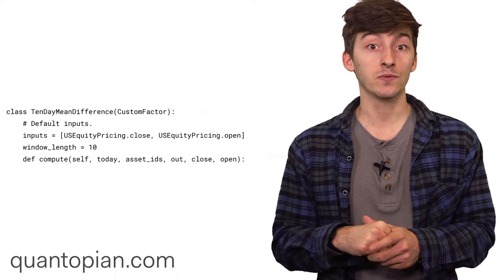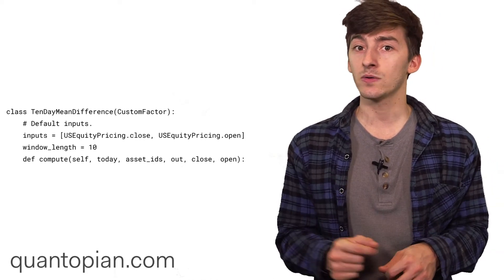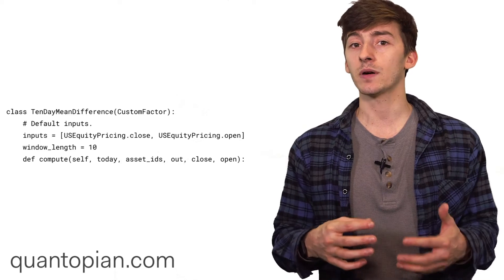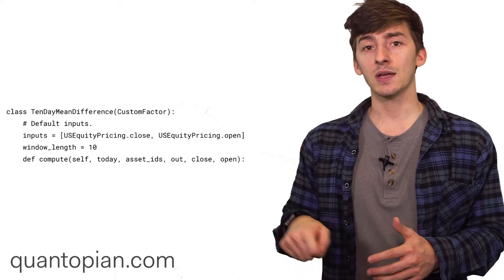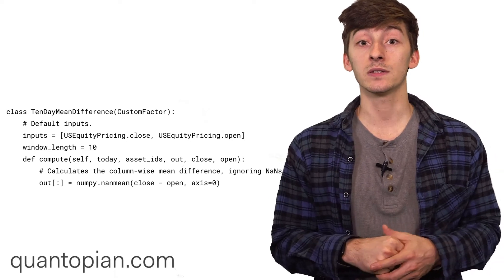Finally, you have to define the compute function, which has a bunch of boilerplate as part of it. Self, today, assets, and out are the first parameters as part of the compute function. And then after that, you add in names for the inputs that you feed into the custom factor.